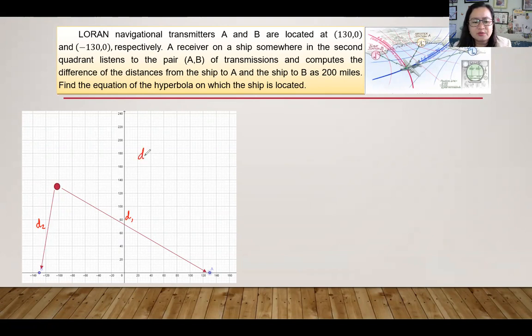Remember that we have learned about the characteristics of hyperbolas that if we get the absolute difference of the distances, it's equal to 2A.